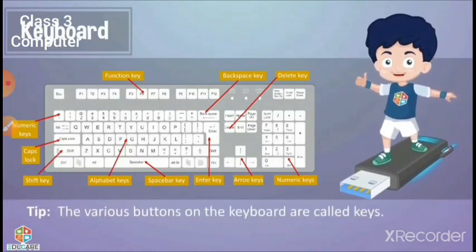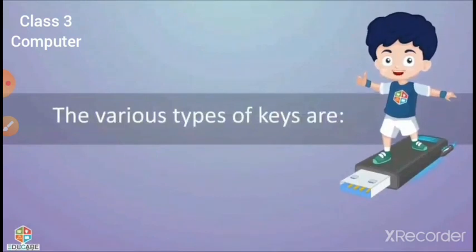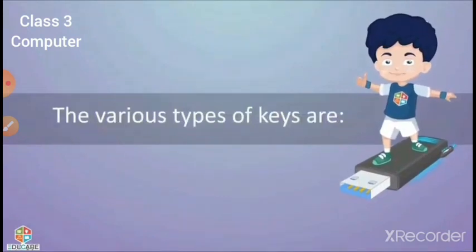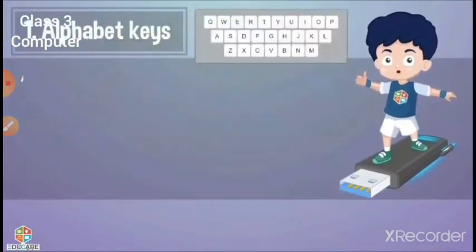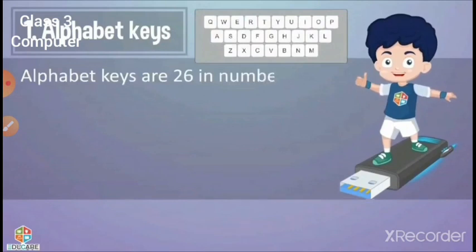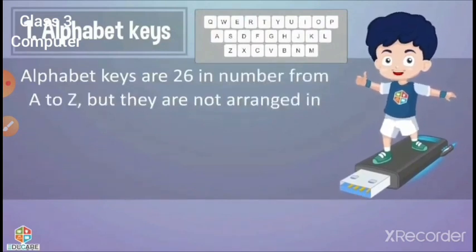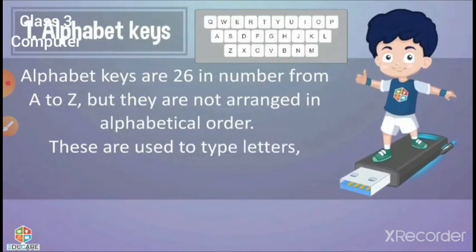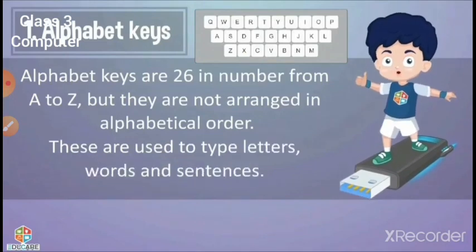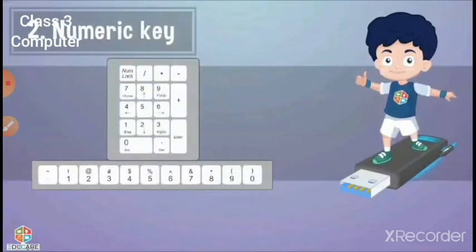The various types of keys are: alphabet keys — alphabet keys are 26 in number, from A to Z. They are not arranged in alphabetical order. They are used to type letters, words, and sentences.